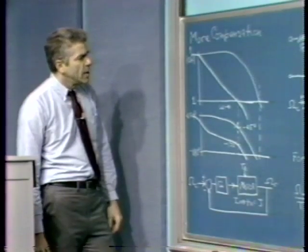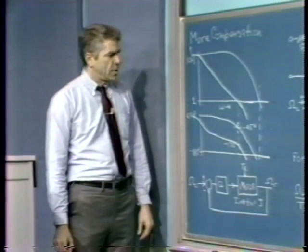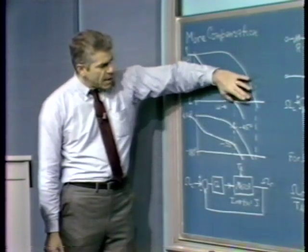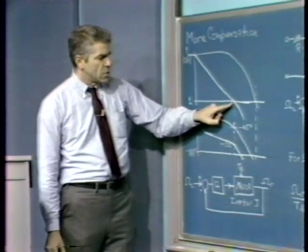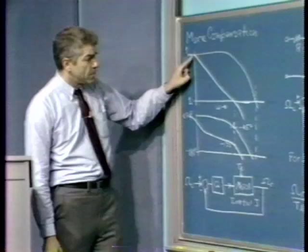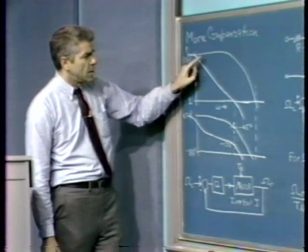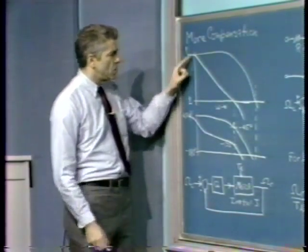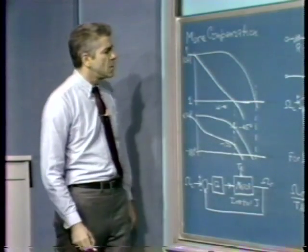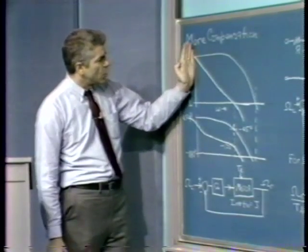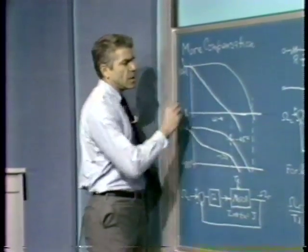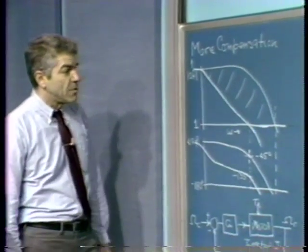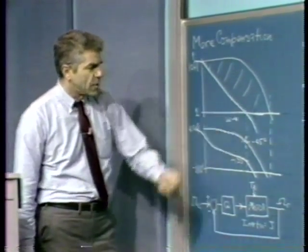The price we've paid, however, is a very significant one in terms of the bandwidth of the resultant system. Originally our crossover frequency was much higher. We've made a very major change — we've lowered crossover frequency considerably by putting in our dominant pole, starting the roll-off at a much lower frequency. We've also lost desensitivity over a very wide range of frequencies. The shaded area is a measure of the desensitivity we've lost as a function of frequency.